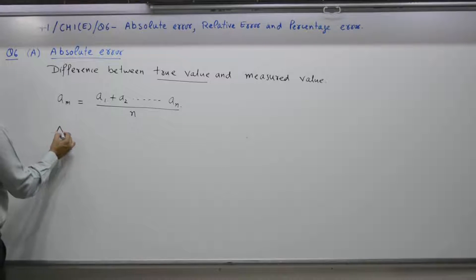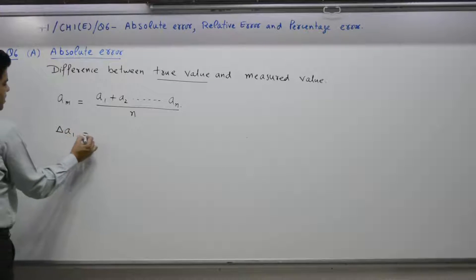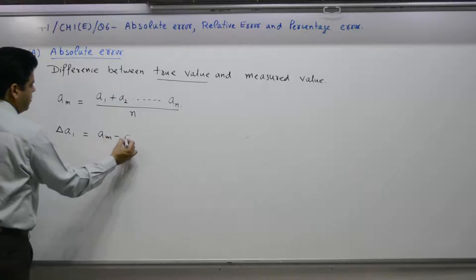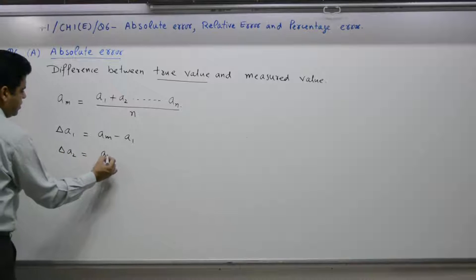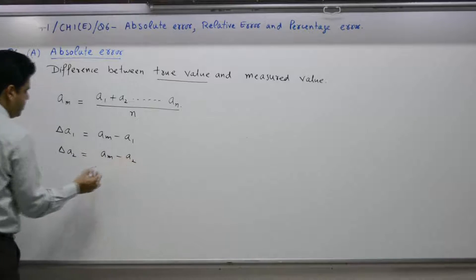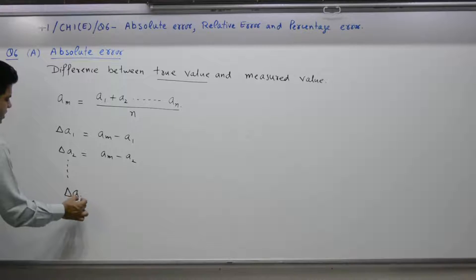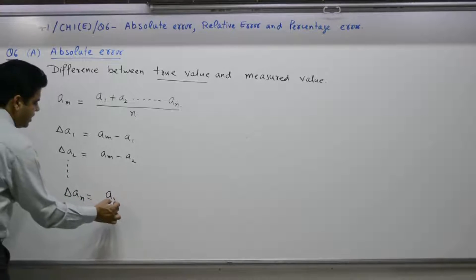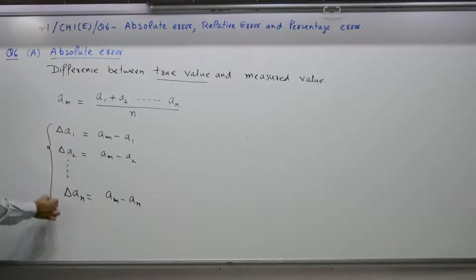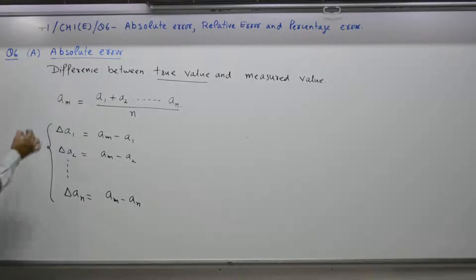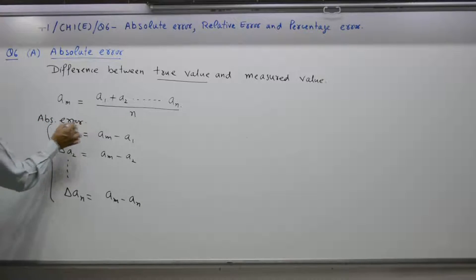Absolute error in the first case: delta a1 is equal to am minus a1. Delta a2 is equal to am minus a2. If there are n candidates, we take up to a8. So absolute error in different cases comes out accordingly.